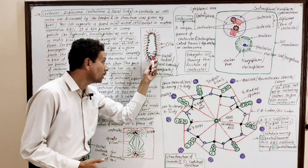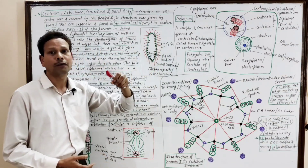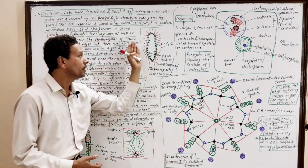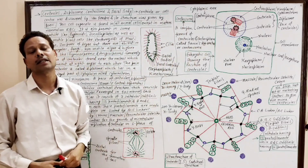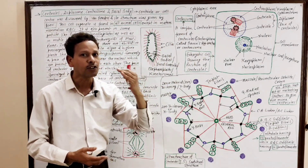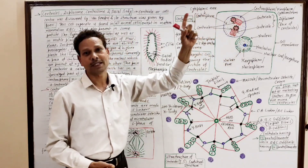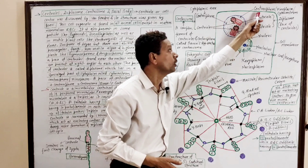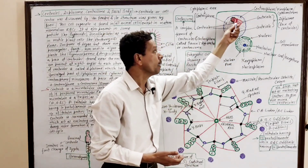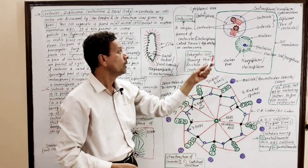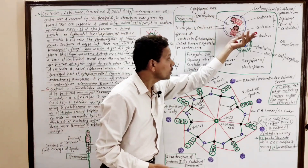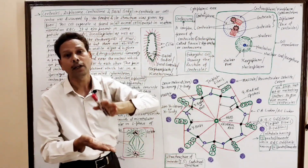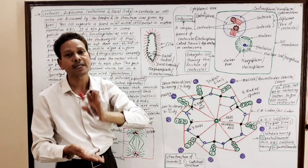Basal bodies are present in the outer part of the cytoplasm, just below the cell membrane, and these basal bodies are involved in the formation of cilia and flagella. In today's lecture we have discussed the centrioles, which are a pair — the diplosome — present in a clear part of cytoplasm called the centrosphere. This entire complex of a pair of centrioles plus the centrosphere is the centrosome, lying just near the nucleus in the central part of a cell.